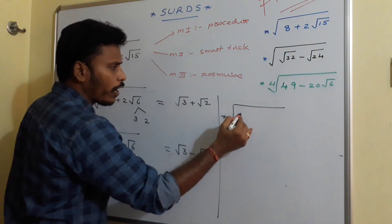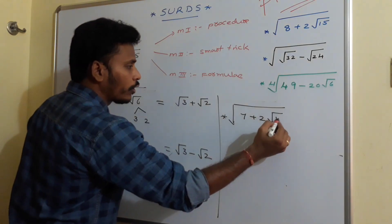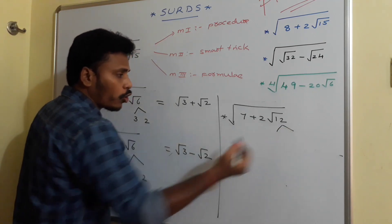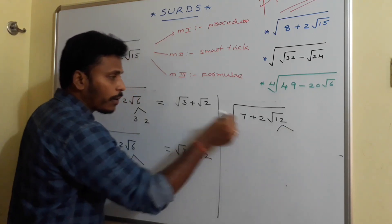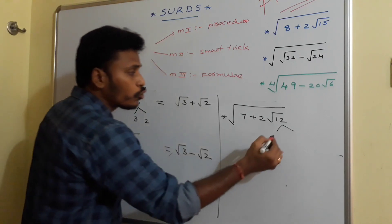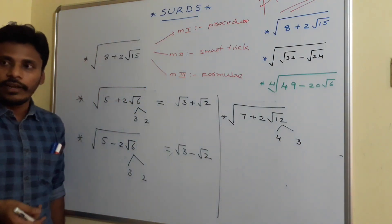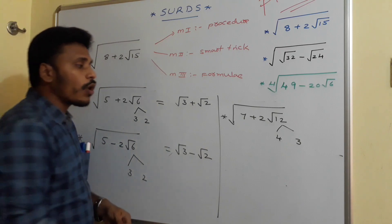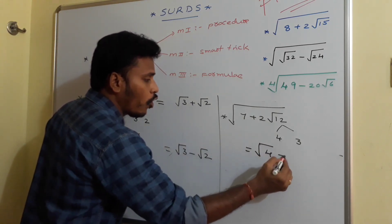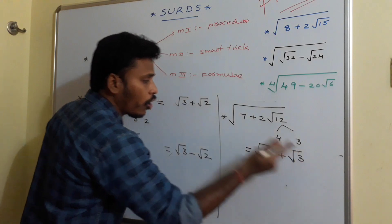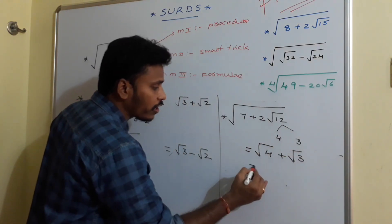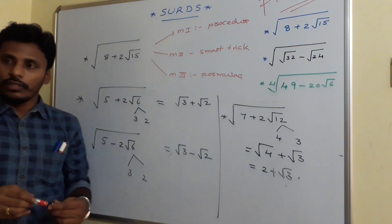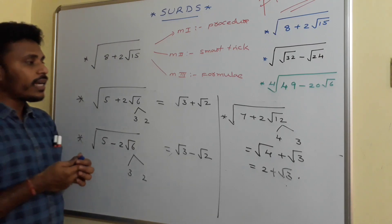For square root of 7 plus 2 root 12: split 12 as a product of two numbers whose sum is 7. Choose 4 and 3, since 4 times 3 is 12 and 4 plus 3 is 7. So the answer is square root of 4 plus square root of 3, which simplifies to 2 plus root 3.